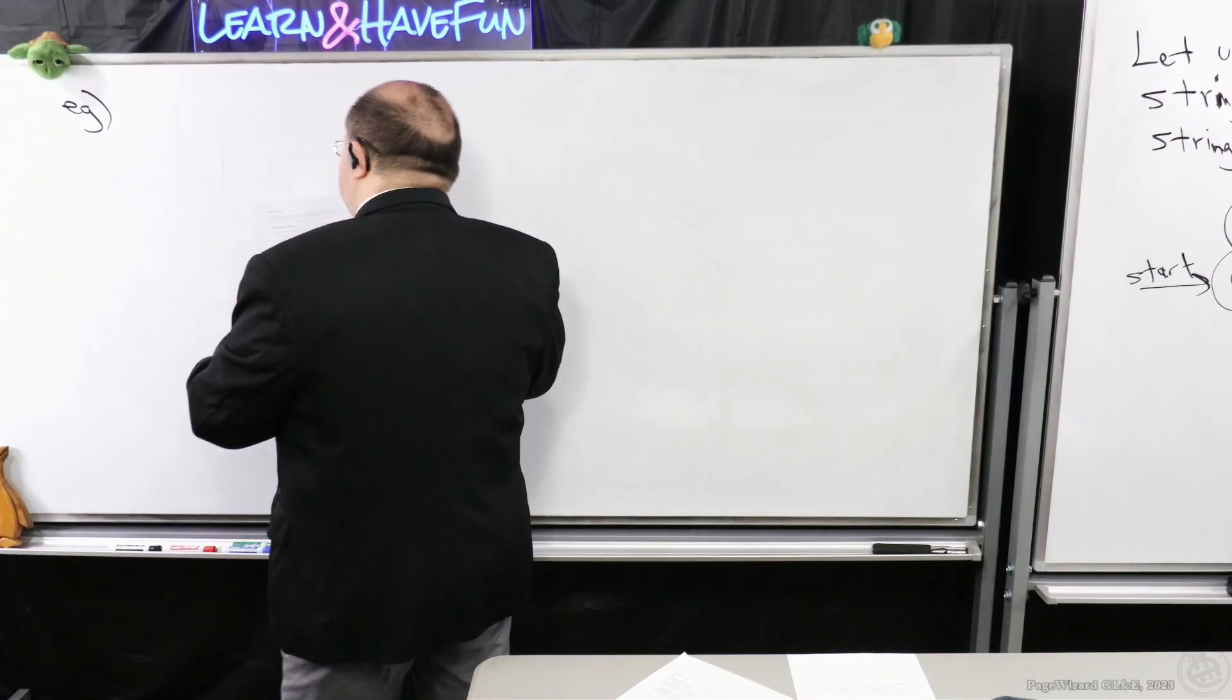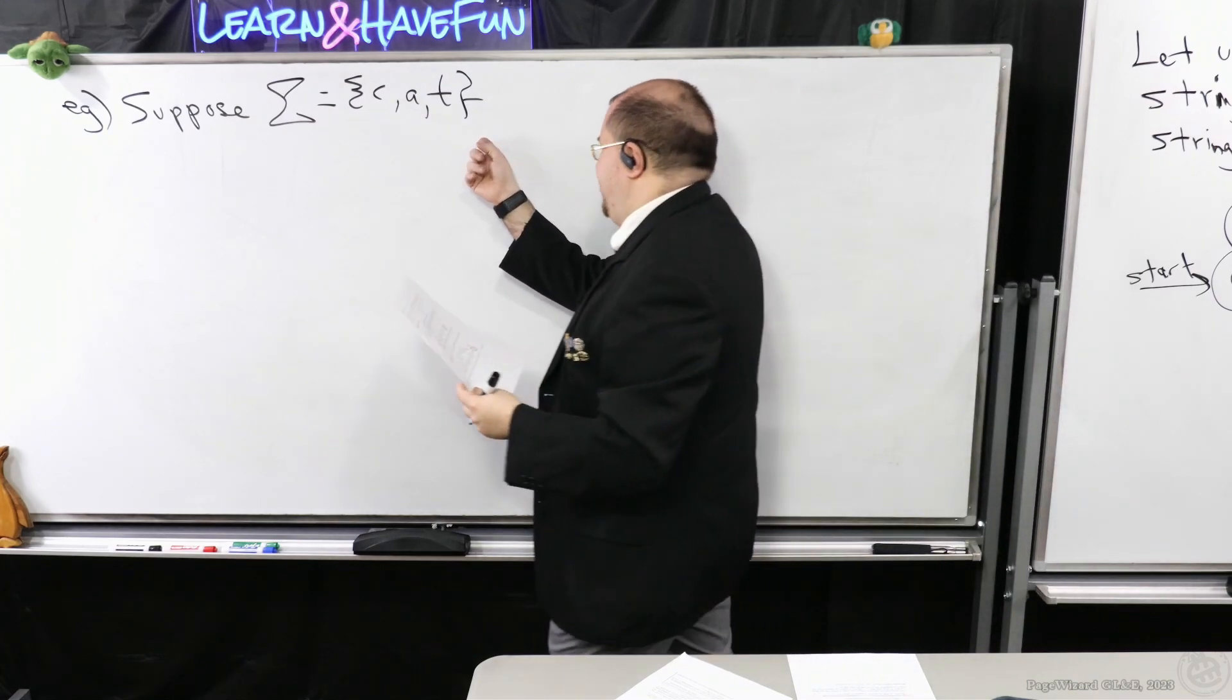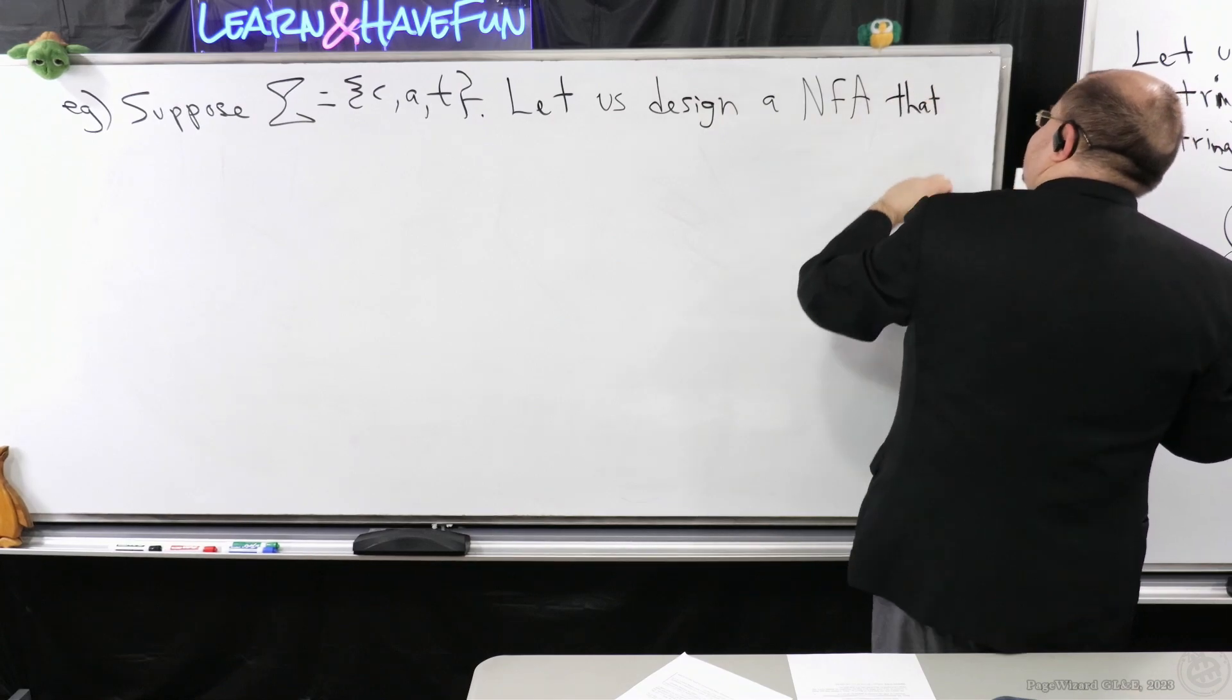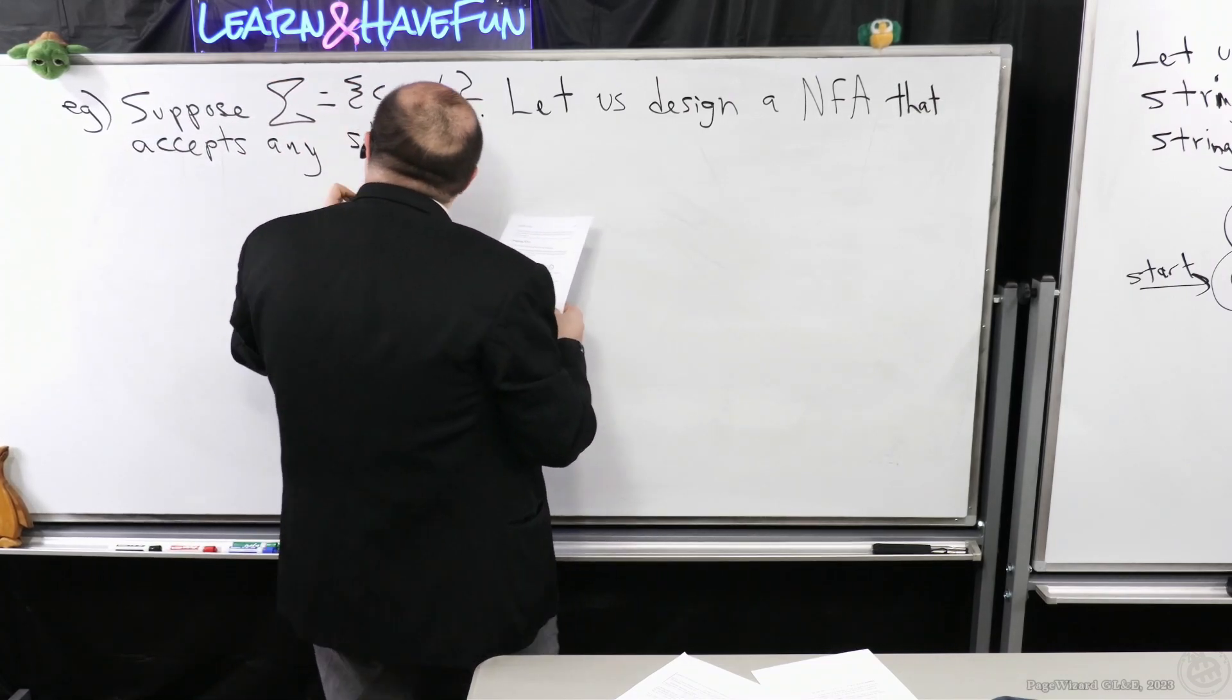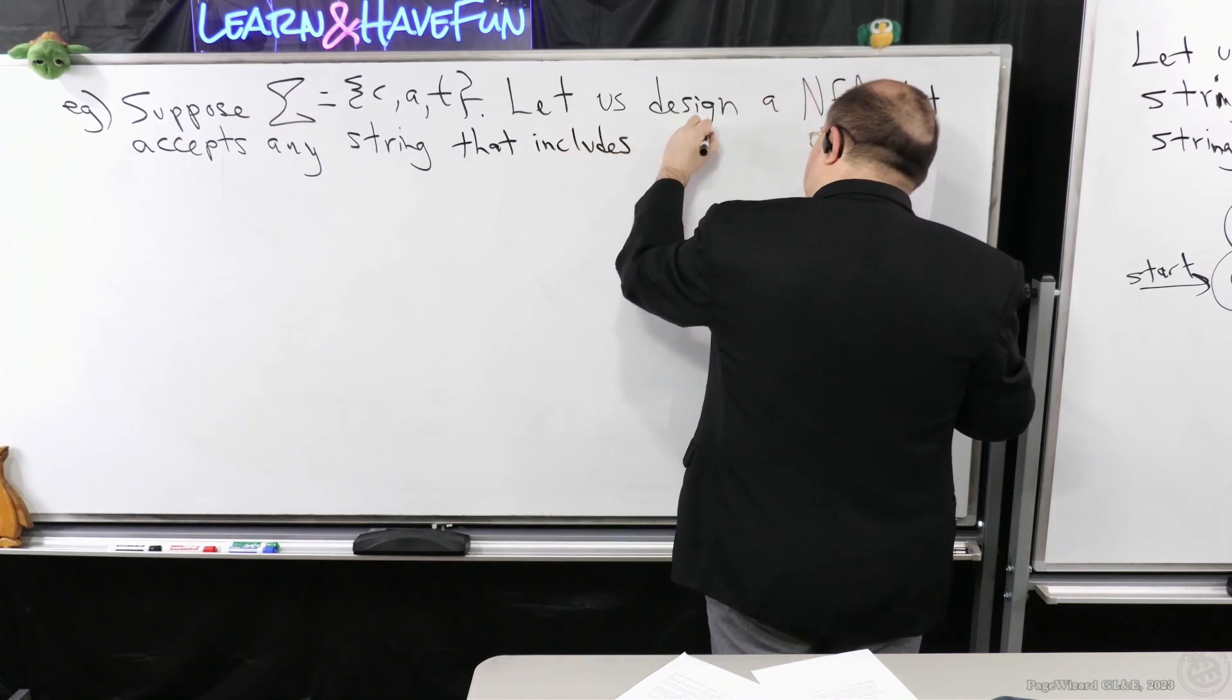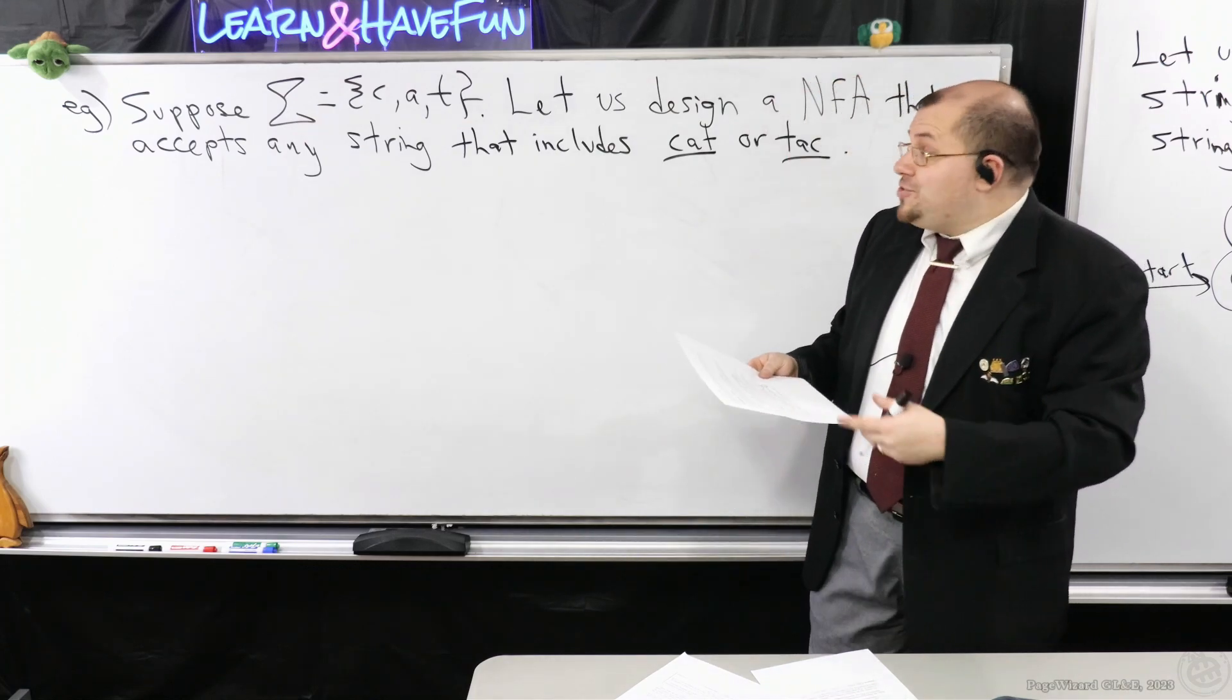So let's consider when we have an alphabet with three symbols in it, C, A, and T, cat. Like Miss Kitty, she's a cat. So suppose I can have a cat. So let us design an NFA that accepts any string. And when I say any string, I'm referring to any string over this alphabet. Any string that includes cat, so the phrase cat, or tack, which is backwards. So let's take all of the ideas we've seen up to this point for designing NFA, and let's try approaching this.